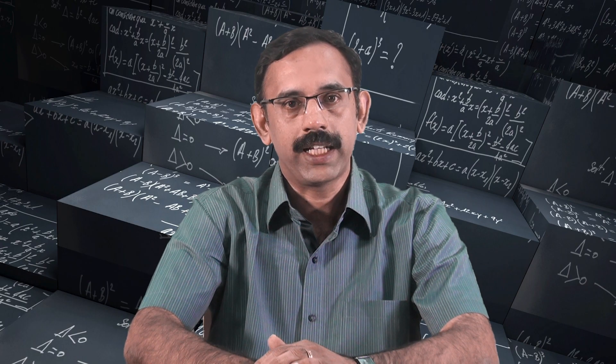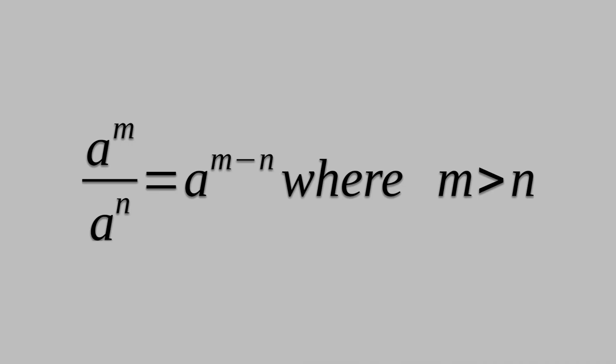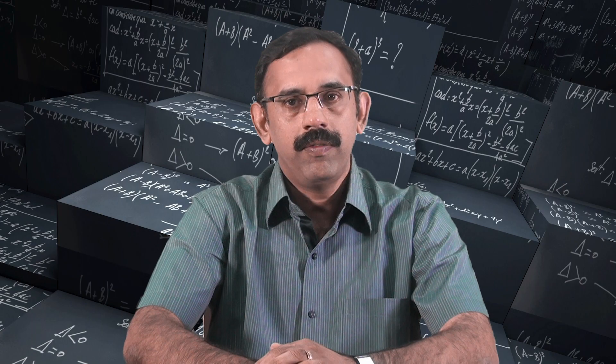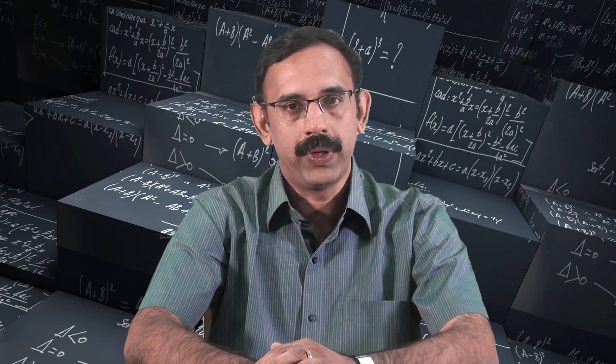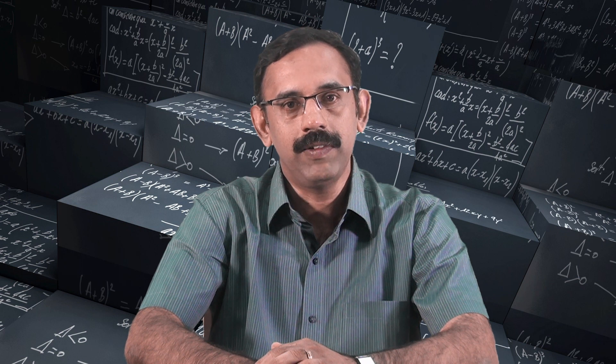We also know other laws of exponents: a raised to m divided by a raised to n is equal to a raised to m minus n, where m is greater than n. And a raised to m whole raised to n is equal to a raised to mn. Will the same laws of exponents work when m and n are negative integers?